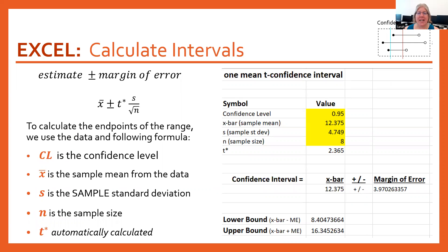Here is what this looks like in Excel. It's still in the same spreadsheet used with chapters 16 and 17. You still put in your confidence level as a decimal, still put in x̄ (your sample mean), and now you put in s (your sample standard deviation) and n (your sample size). Excel will automatically calculate t* correctly for you, and then give you both x̄ plus or minus your margin of error, as well as your lower and upper bounds.